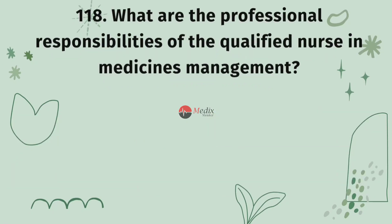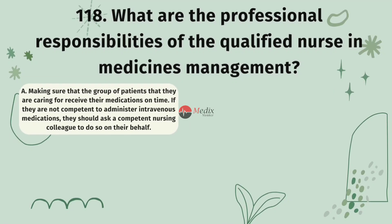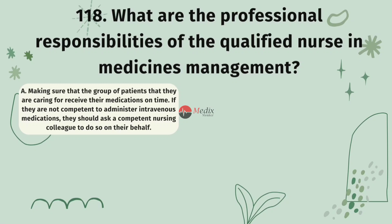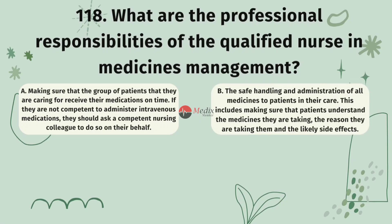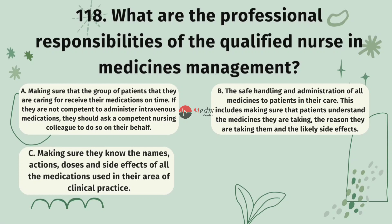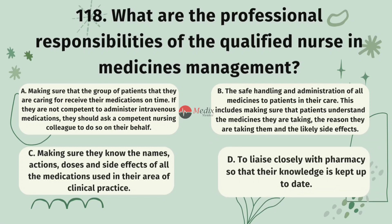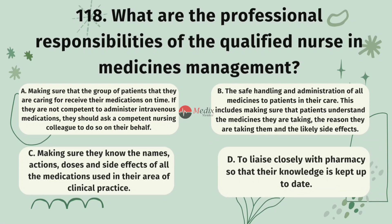Question 118. What are the professional responsibilities of the qualified nurse in medicines management? Option A, making sure that the group of patients they are caring for receive their medications on time; if not competent to administer intravenous medications, they should ask a competent nursing colleague. Option B, the safe handling and administration of all medicines, including making sure patients understand the medicines they are taking, the reason they are taking them, and the likely side effects. Option C, making sure they know the names, actions, doses, and side effects of all medications in their area of practice. Option D, to liaise closely with pharmacy so their knowledge is kept up to date. The correct answer is B.